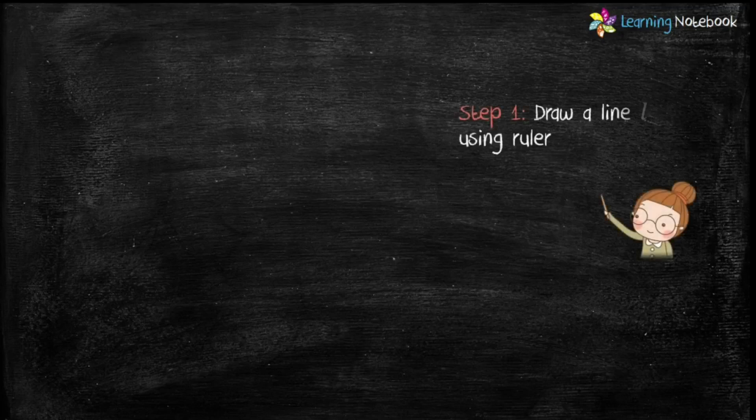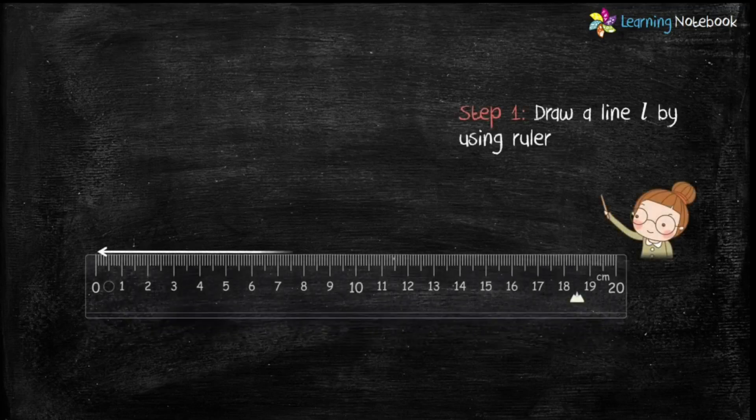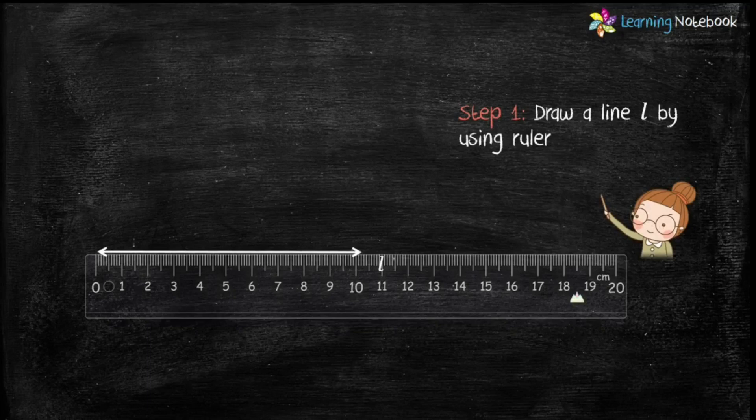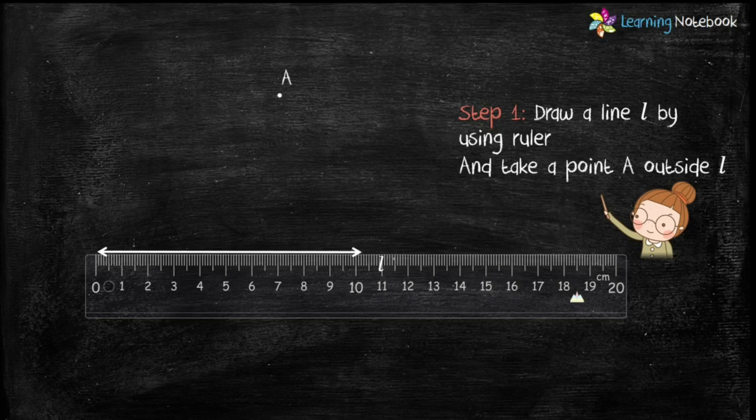Now students, let's start the construction. Step 1 is draw a line L by using a ruler and take a point, let's say A, outside this line L.